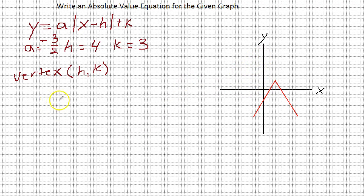So now all we have to do is plug these values into our equation. We say y equals negative 3 halves absolute value x minus h is 4, close the absolute value, plus k is positive 3, so plus 3. And here is our equation of the given graph.